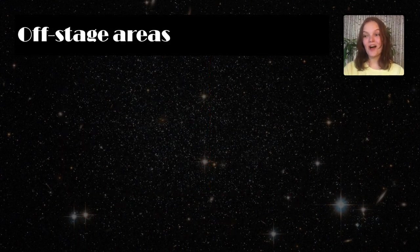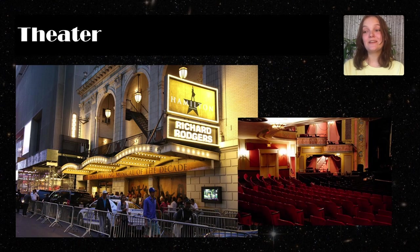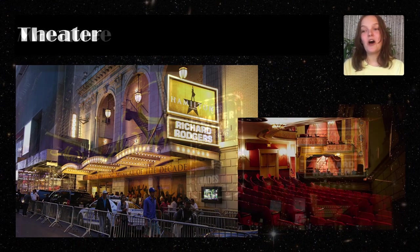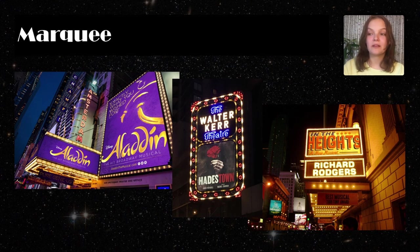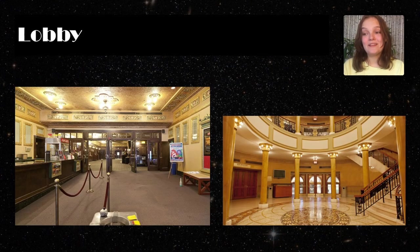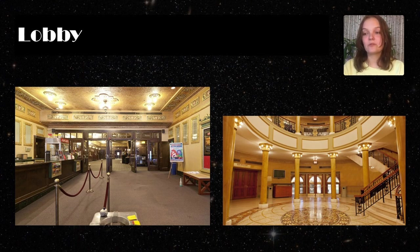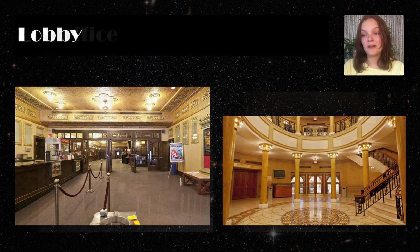Now let's look at some offstage areas in the theater. The theater is the building or outdoor area used for dramatic performances. A marquee is an illuminated sign that hangs over the main theater entrance and displays the name of the theater, the current play, or the actors. The lobby is a room in the theater that serves as the public entrance to the building. Ticket counters, coat check, refreshments, and bathrooms are all located in or near the lobby.